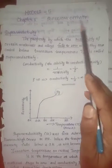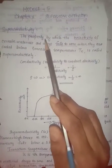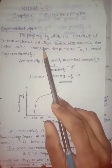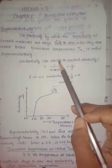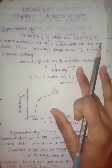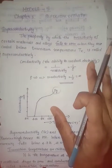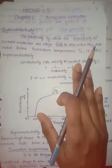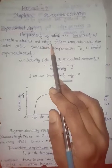The first chapter is Superconductivity. What is Superconductivity? Superconductivity is a property of certain metals and alloys.